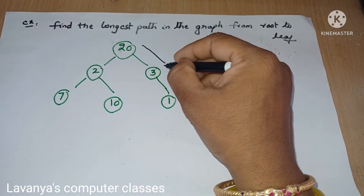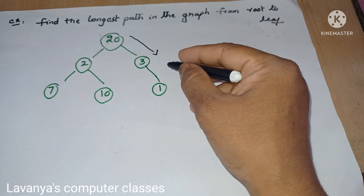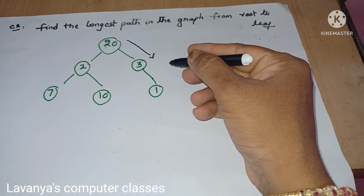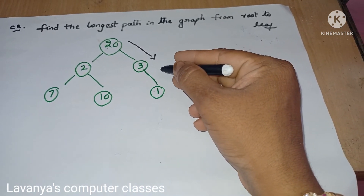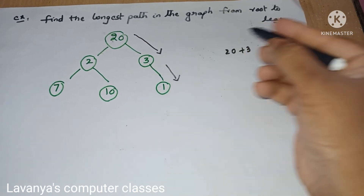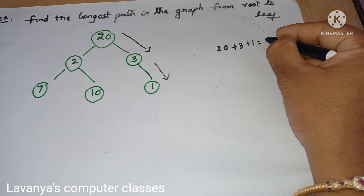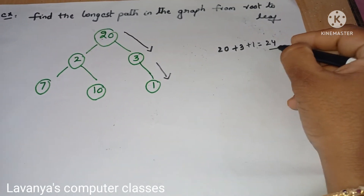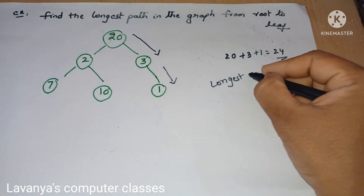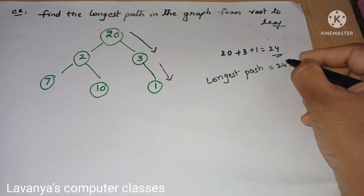So starting from 20, I selected the right-hand side path, which is 3. After 3 there is only one option, so I must go to 1. The total is 20 plus 3 plus 1, which equals 24. So according to greedy method, the longest path value I found is 24.